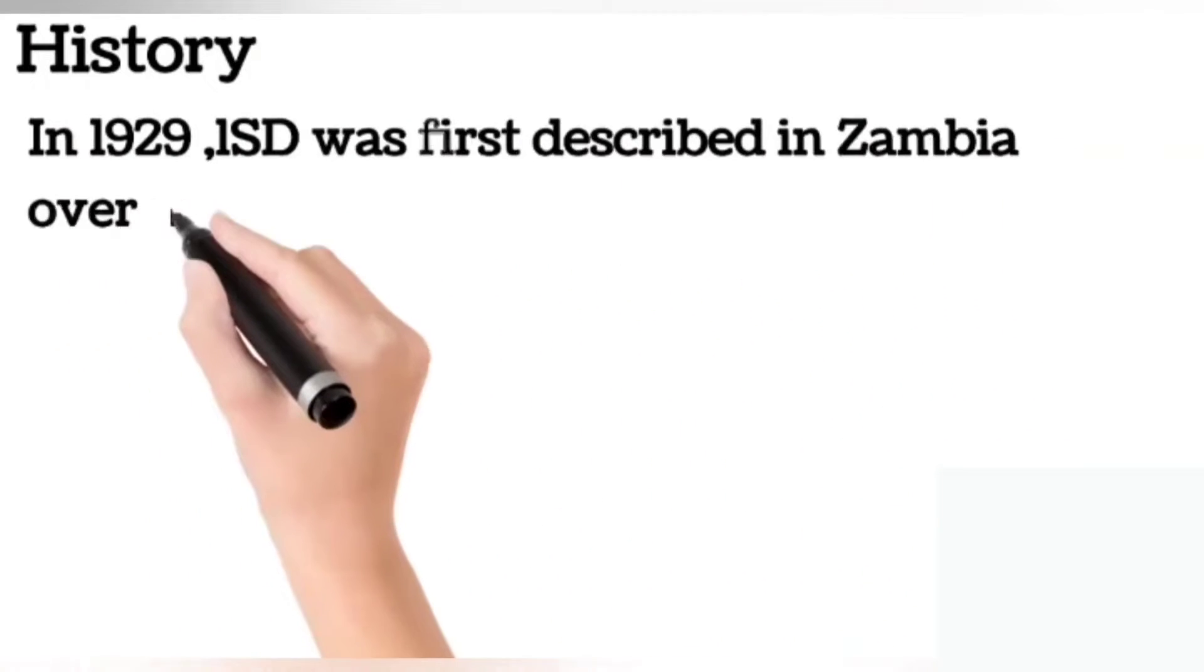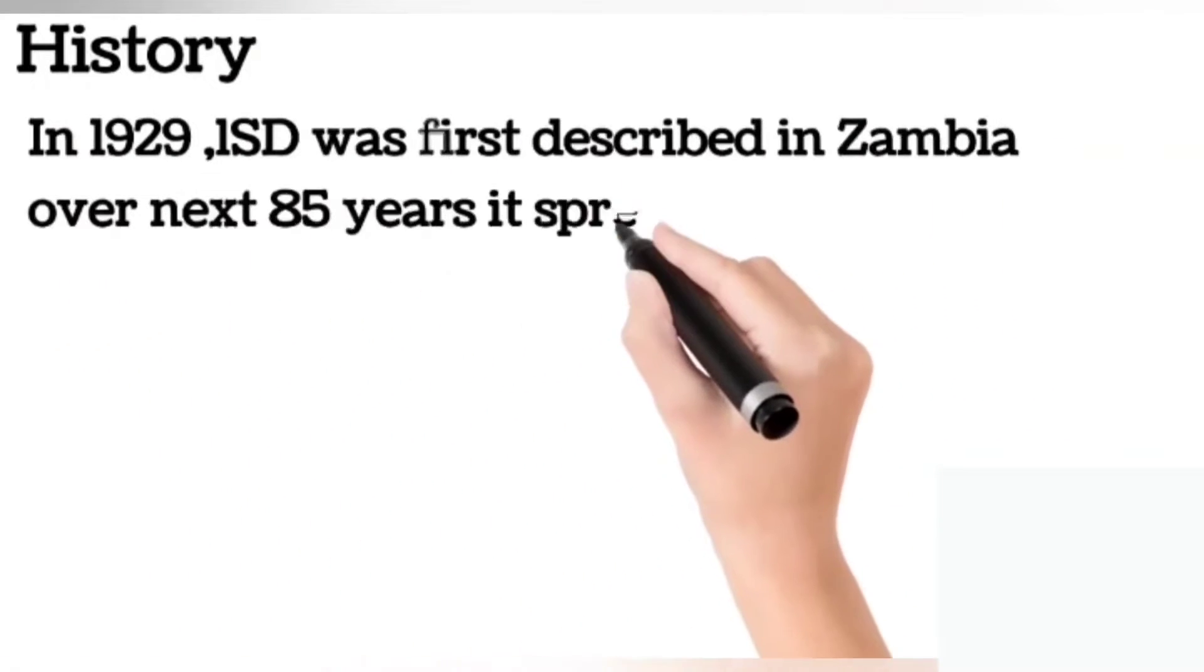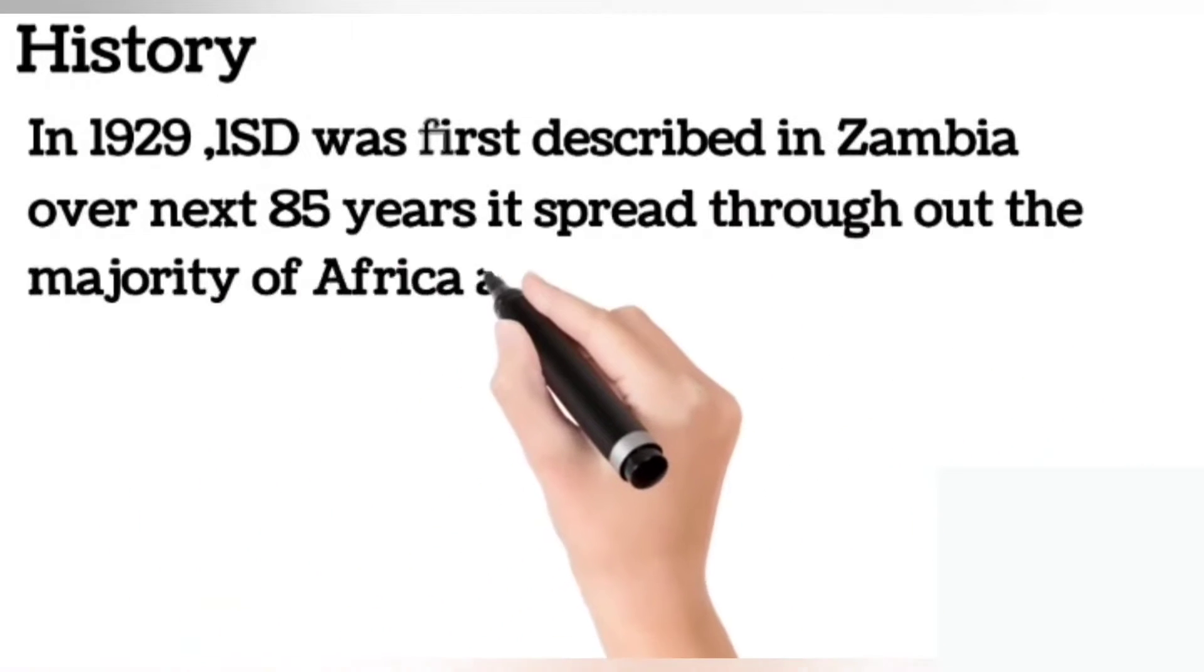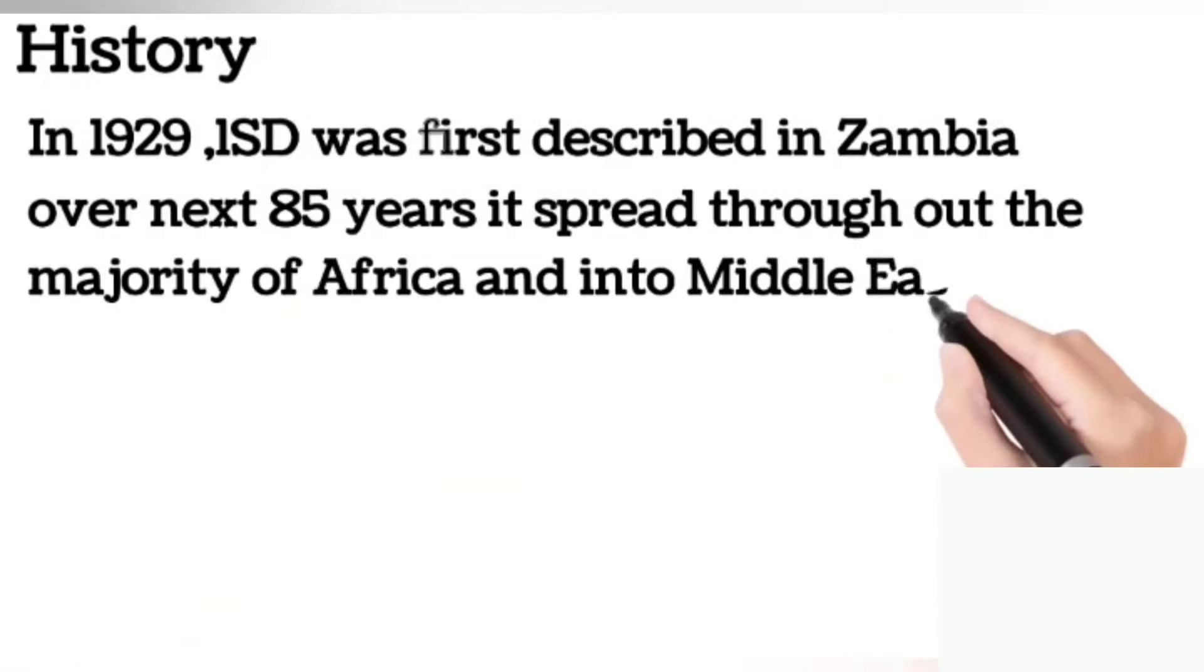History: In 1929, LSD was first described in Zambia. Over the next 85 years, it spread throughout the majority of Africa and into the Middle East.